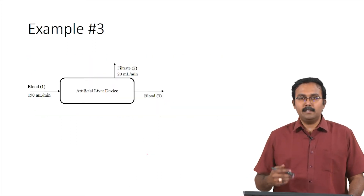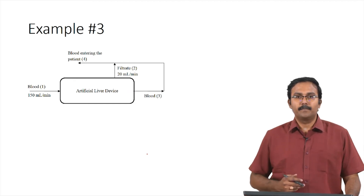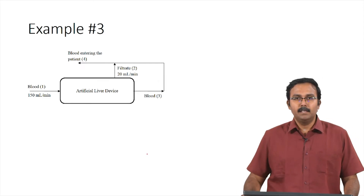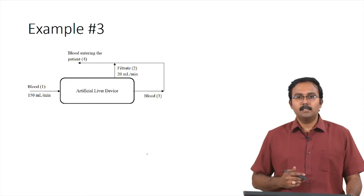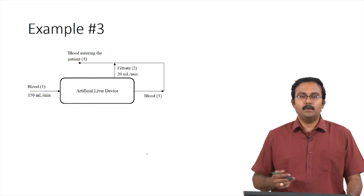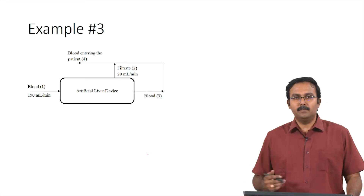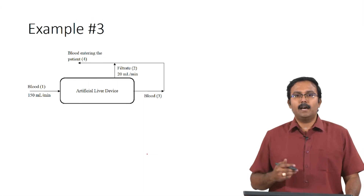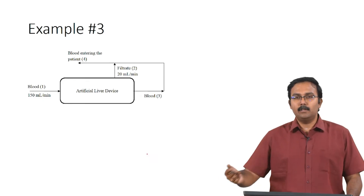To understand this in a simpler block diagram: we have blood coming from the patient at 150 ml per minute entering the artificial liver device. There are two outlets — the first is the filtrate leaving at 20 ml per minute, and the other is the intraluminal blood leaving the device. This blood and the filtrate are then mixed together to form the blood entering back into the patient.